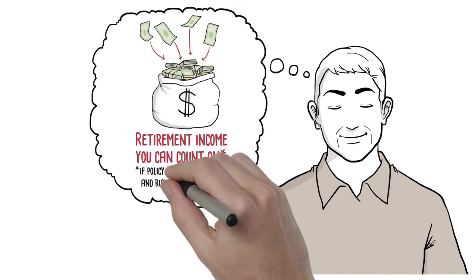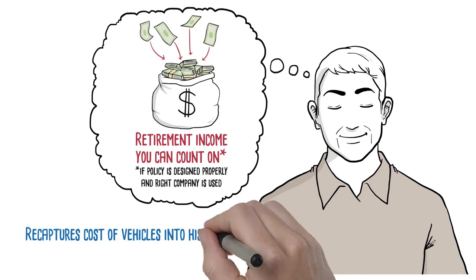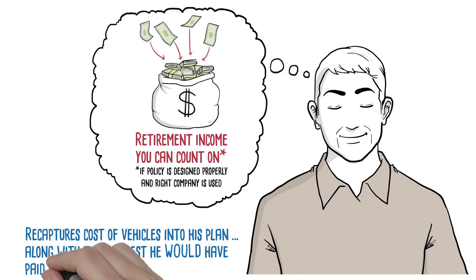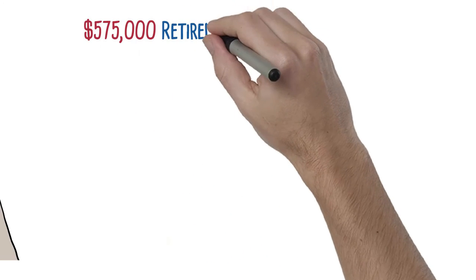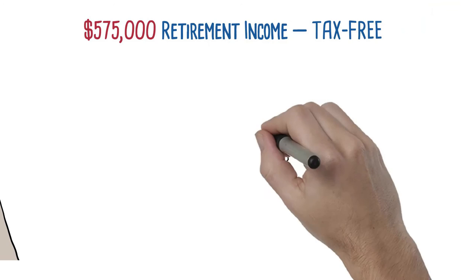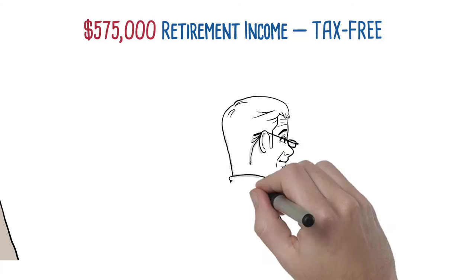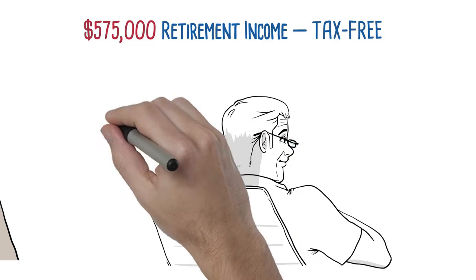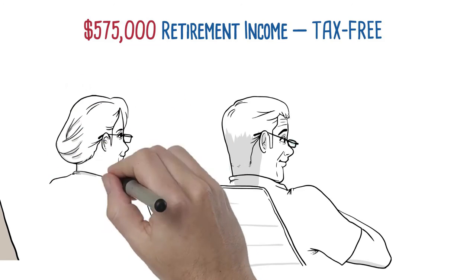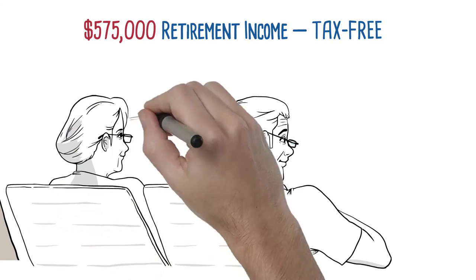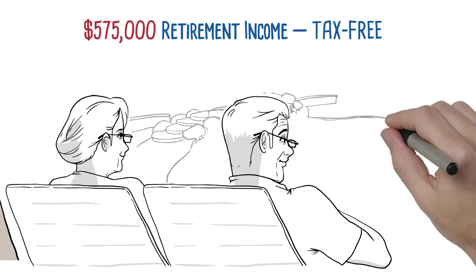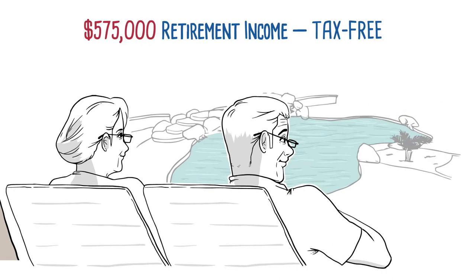All the money in his policy, including the interest he's recaptured, will provide Kevin with a nice income in retirement, an income he knows he can count on, if the policy is designed properly and from the right company. If he lives to be 90 years old, that's $575,000 in retirement income. And the thing that really floats Kevin's boat is that his retirement income will be totally and completely tax-free, based on current tax law.